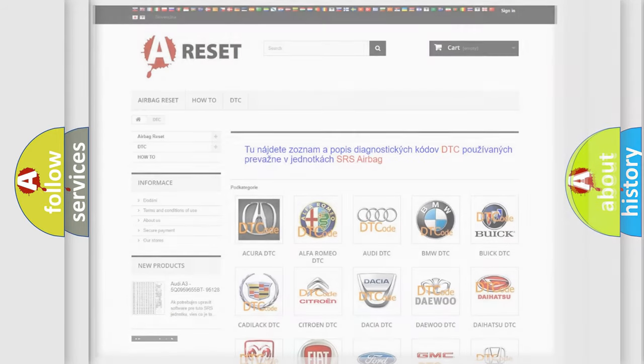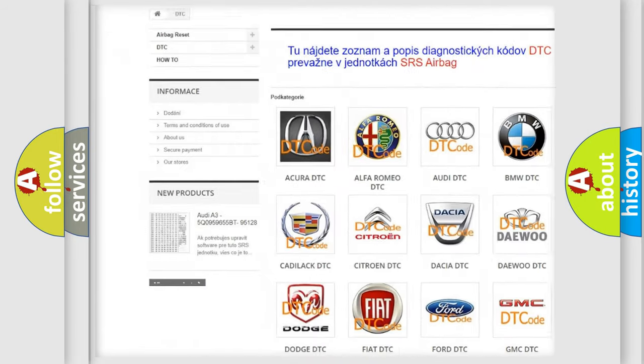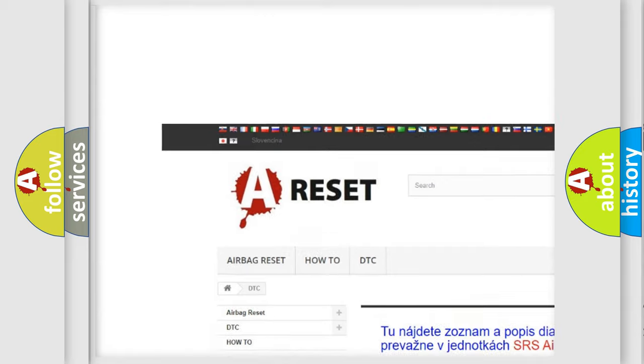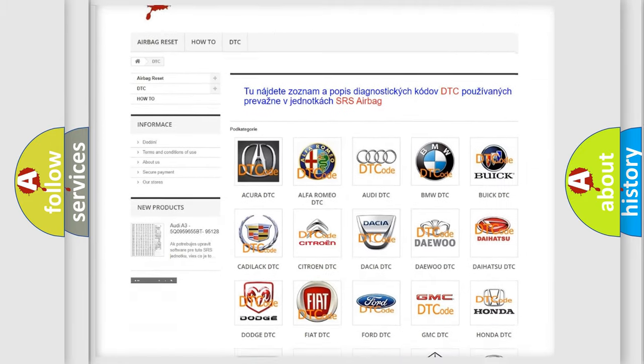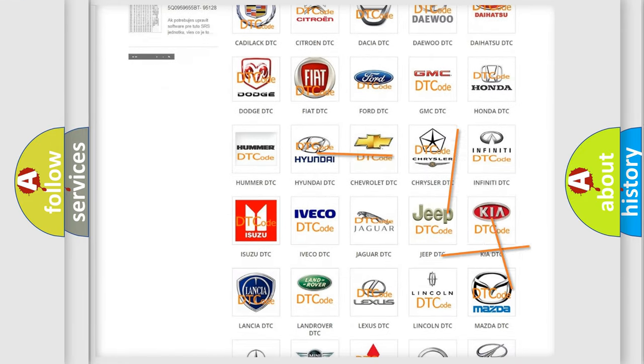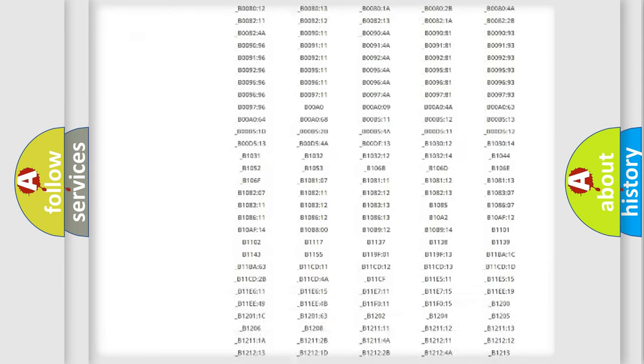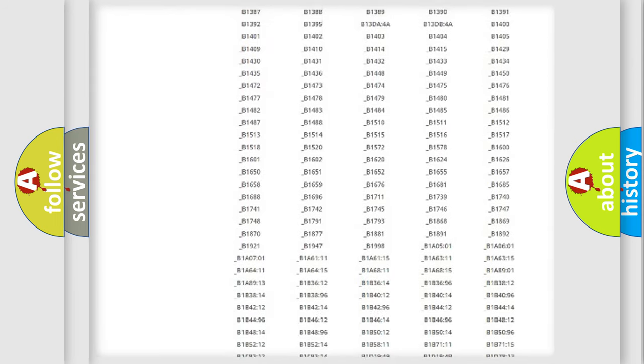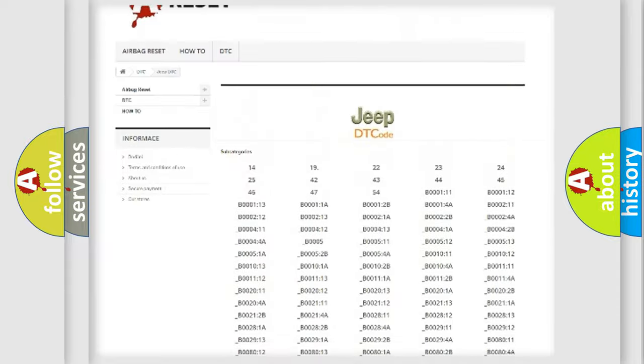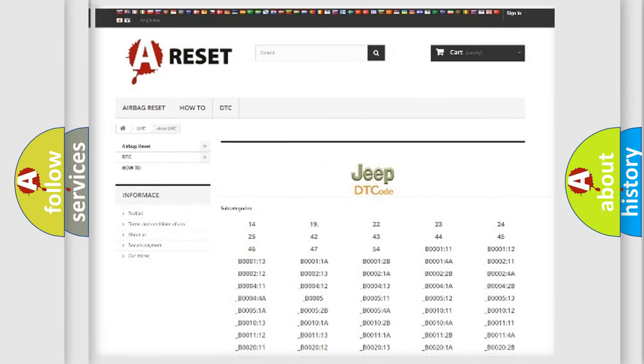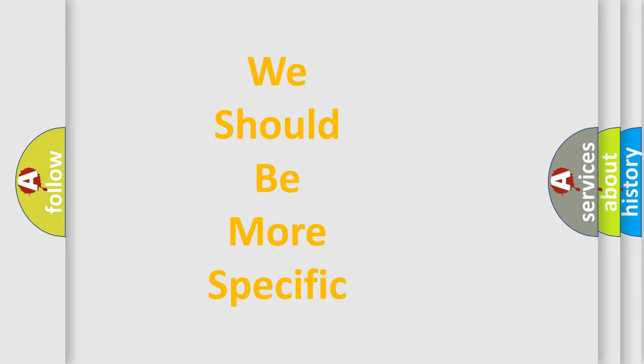Our website airbagreset.sk produces useful videos for you. You do not have to go through the OBD-II protocol anymore to know how to troubleshoot any car breakdown. You will find all the diagnostic codes that can be diagnosed in Jeep vehicles, and many other useful things. The following demonstration will help you look into the world of software for car control units.